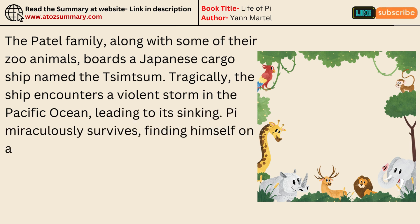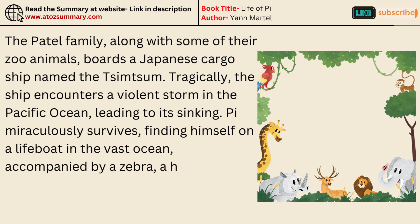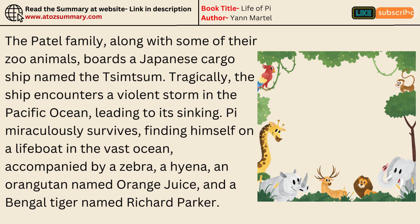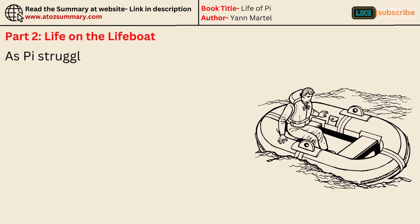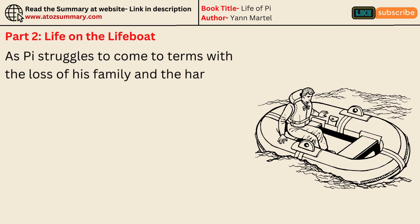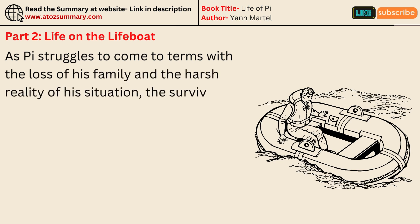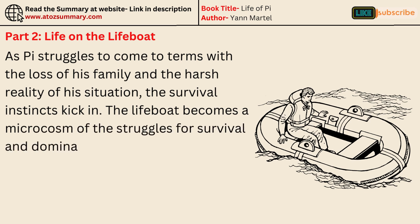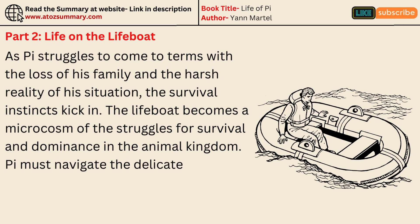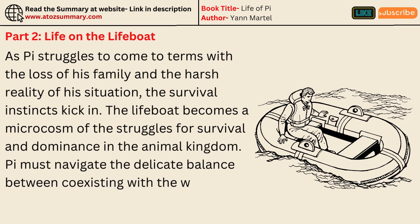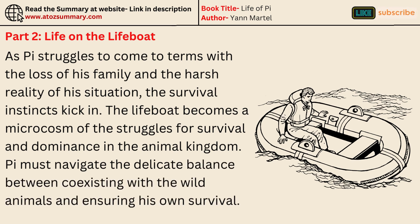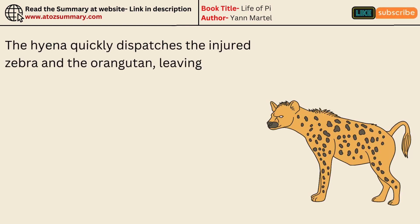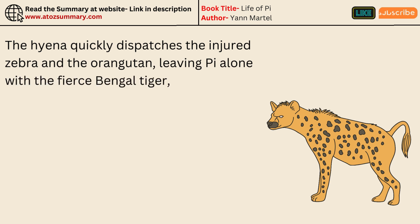Pi miraculously survives, finding himself on a lifeboat in the vast ocean, accompanied by a zebra, a hyena, an orangutan named Orange Juice, and a Bengal tiger named Richard Parker. As Pi struggles to come to terms with the loss of his family and the harsh reality of his situation, survival instincts kick in. The lifeboat becomes a microcosm of the struggles for survival and dominance in the animal kingdom. The hyena quickly dispatches the injured zebra and the orangutan, leaving Pi alone with the fierce Bengal tiger, Richard Parker.